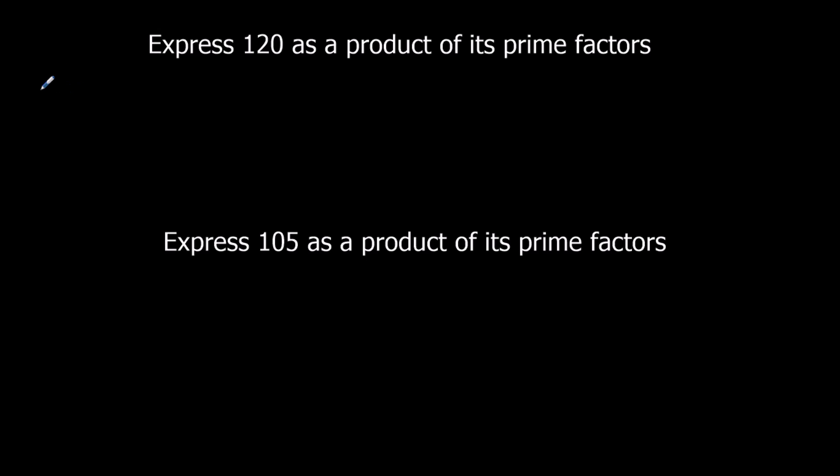Here we're being asked to express 120 as a product of its prime factors. What that means is breaking down 120 until we've only got prime numbers left. So we start with 120 and think: what two numbers can multiply to make 120?